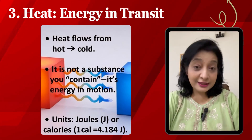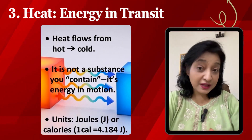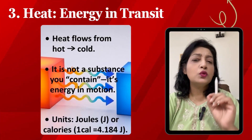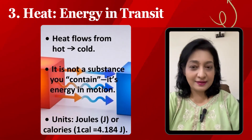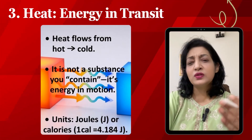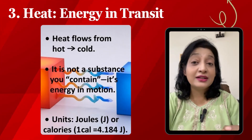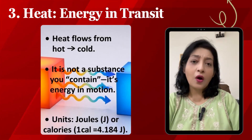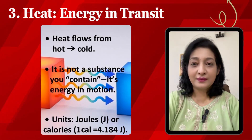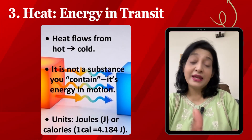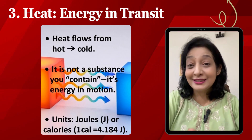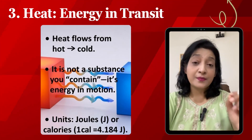Now, heat — energy in transit. Definition: heat Q is the transfer of thermal energy between two systems due to a temperature difference. Heat flows from hot to cold. It is not a substance you contain; it is energy in motion. Units: joules or calories — one calorie equals 4.184 joules. Heat is like money being transferred between bank accounts, and temperature is like how rich each account is.